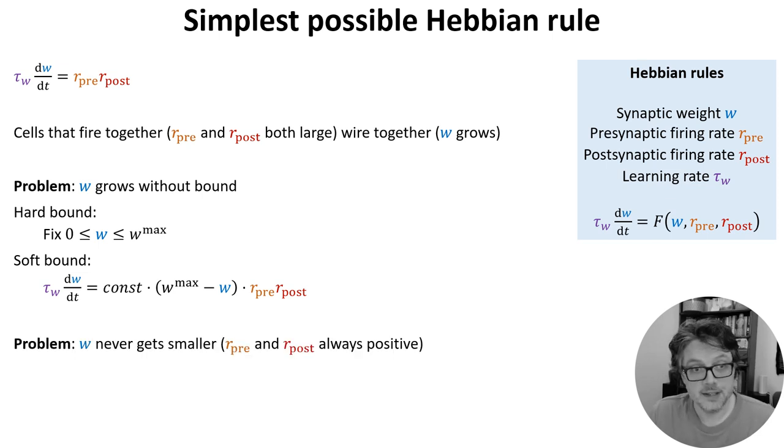Another problem is that in this simple formulation, the weight will only grow, never get smaller, because the pre and the postsynaptic firing rates are always positive numbers. And it is possible to fix this by adding another term, but let's move on to another model and see how that deals with this issue.